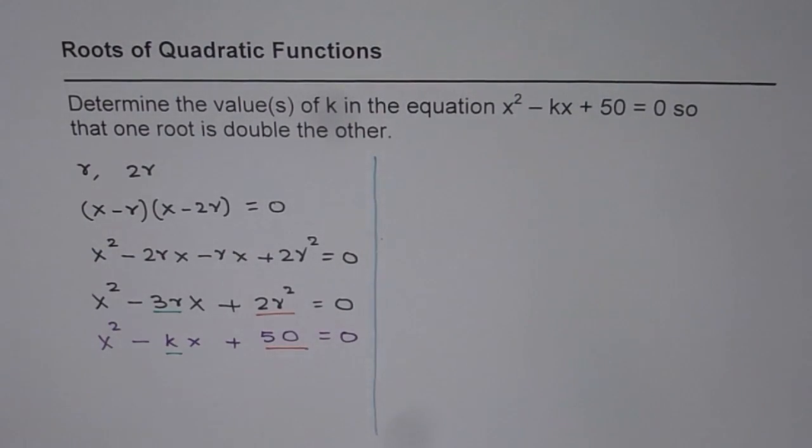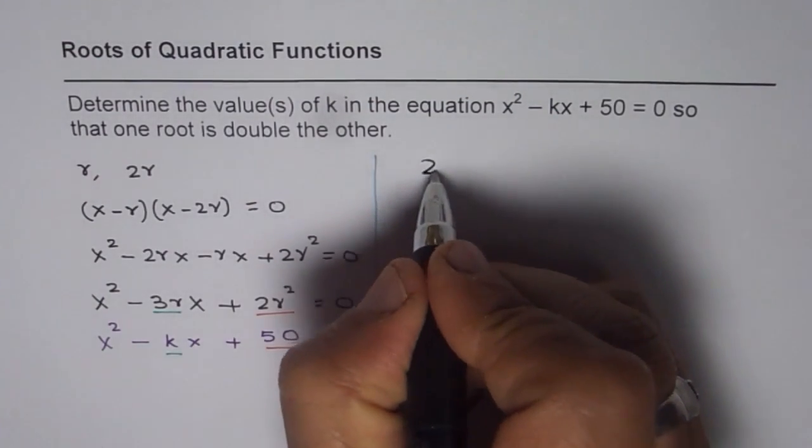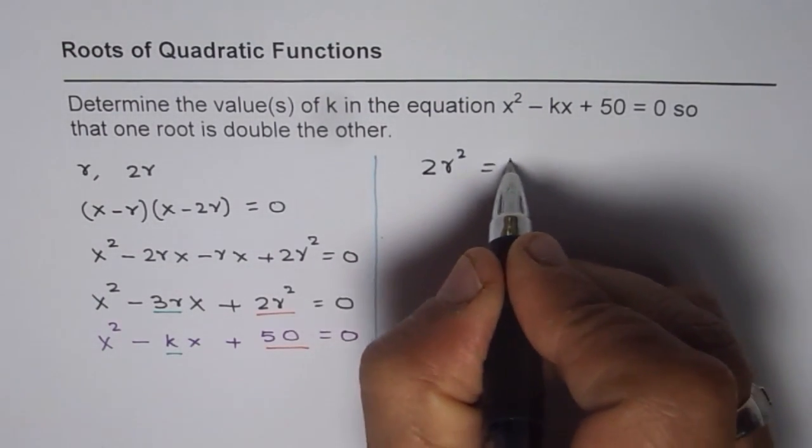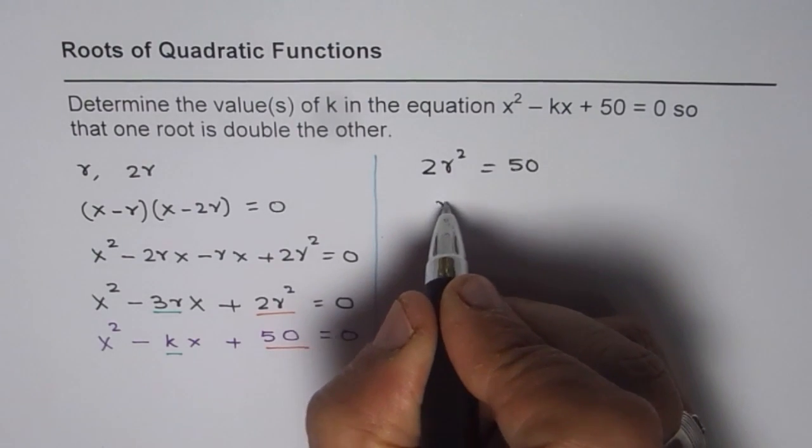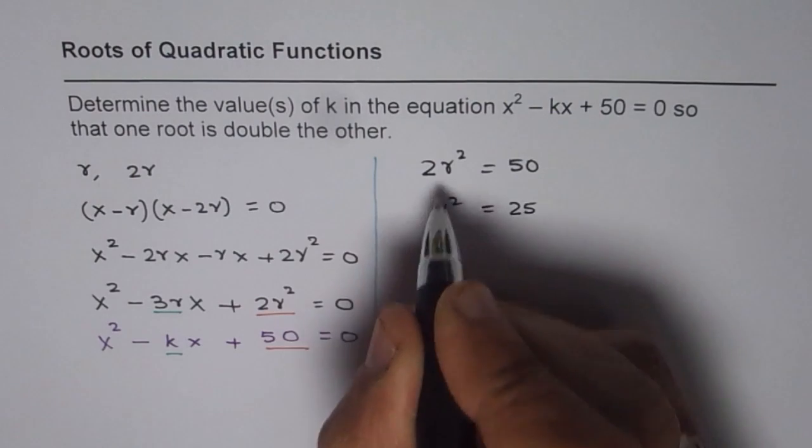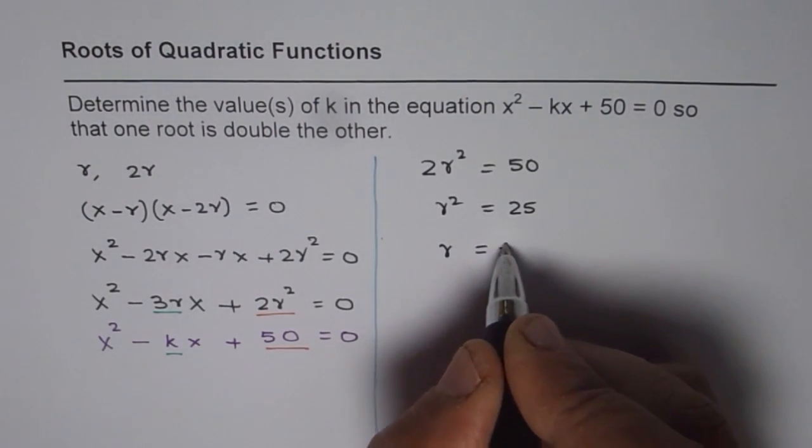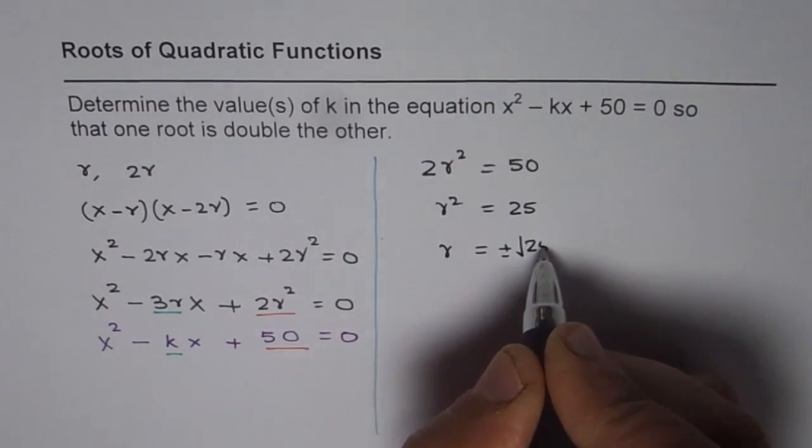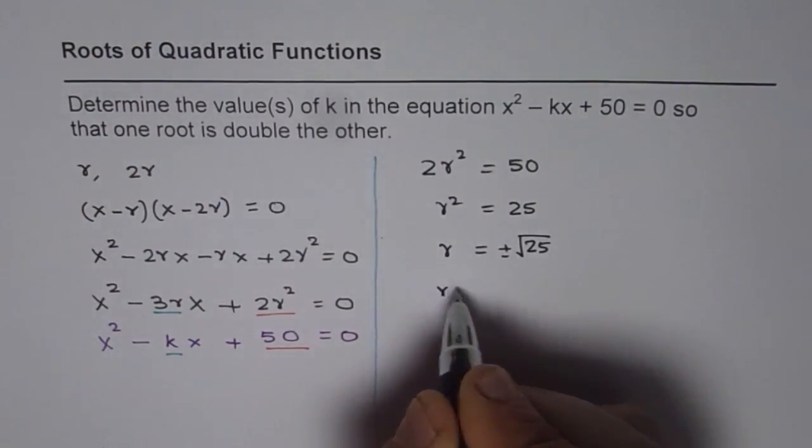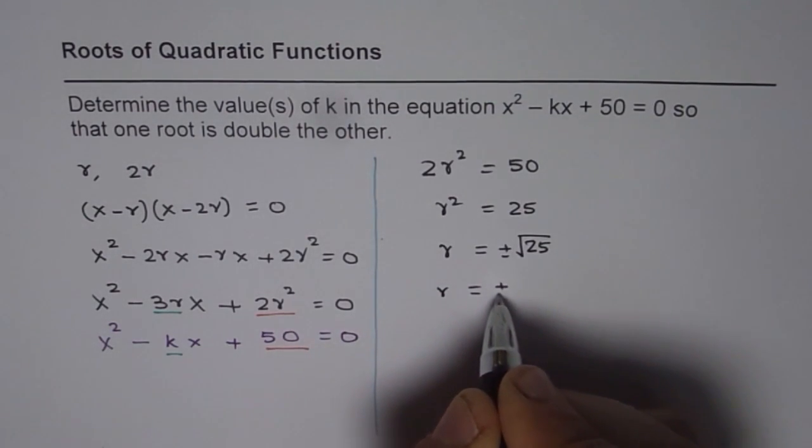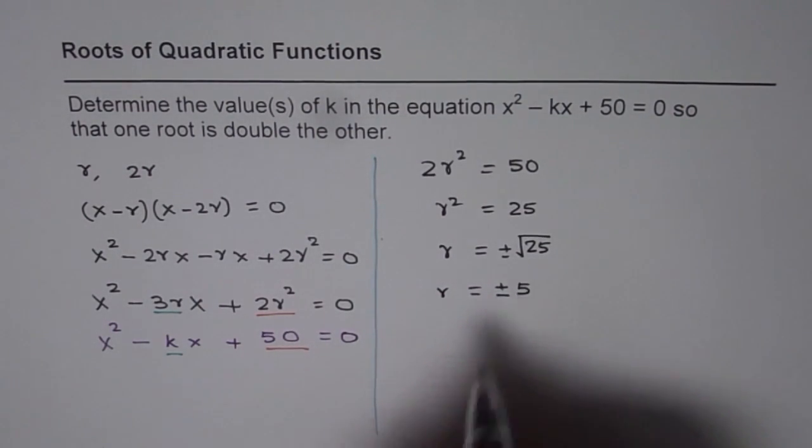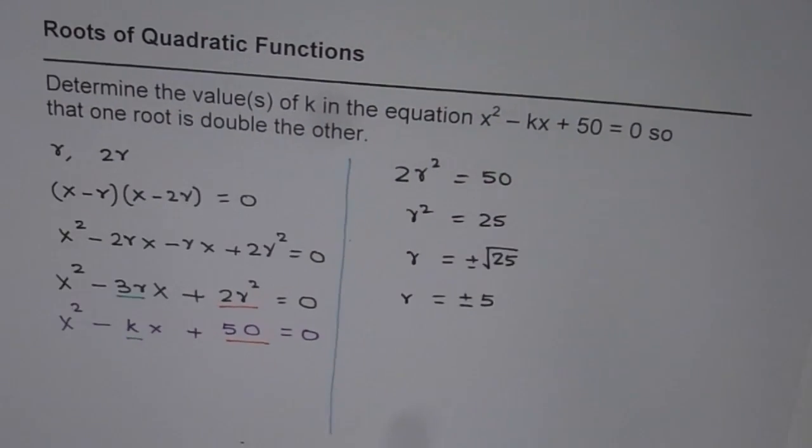Let us begin by comparing 2r² with 50. We have 2r² = 50, that means r² = 25, that is 50 divided by 2, and that gives us r = ± √25, or r = ± 5. So we get two possible values of r.